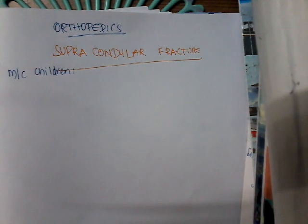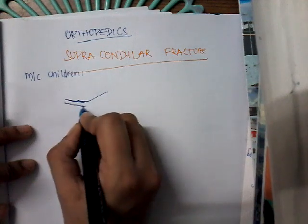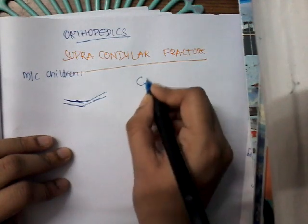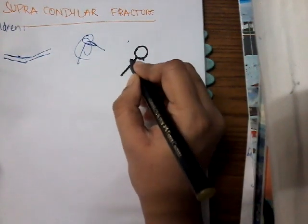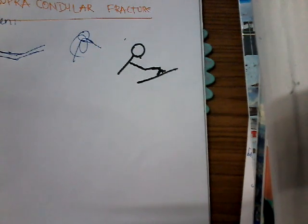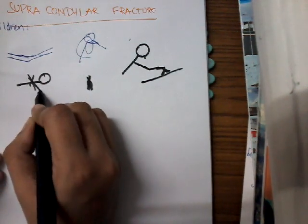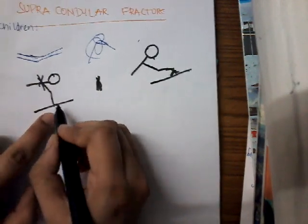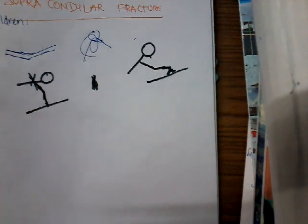The mechanism of supracondylar fracture occurs when a child falls on an outstretched hand. The hand strikes the ground, and as the hand touches the ground the elbow becomes hyperextended. This results in a fracture above the condyles, above the epicondyles, which is called a supracondylar fracture.